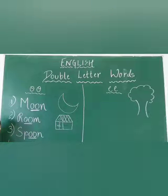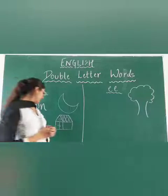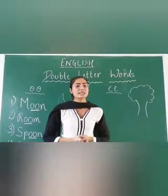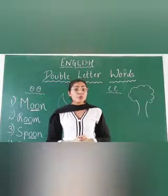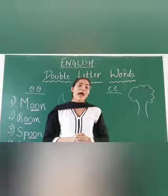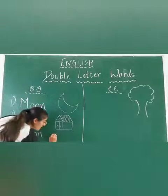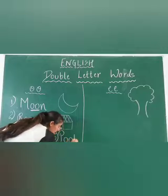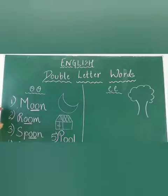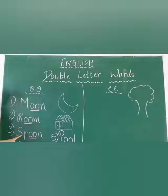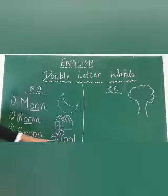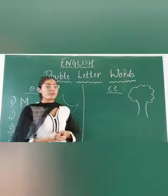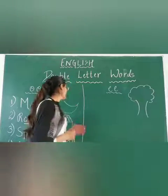So our next word is cool — C, double O, L. There is a pool in your school in which we swim and play. So we have cool and pool. Let's repeat all these words: moon, room, spoon, cool, pool.